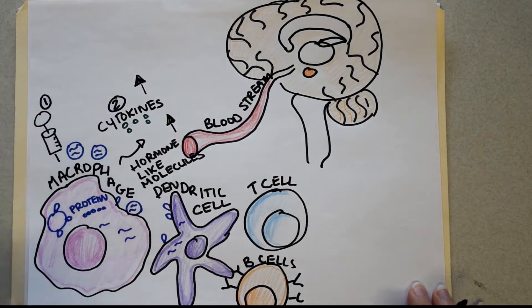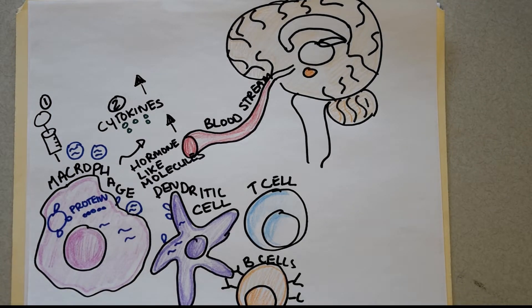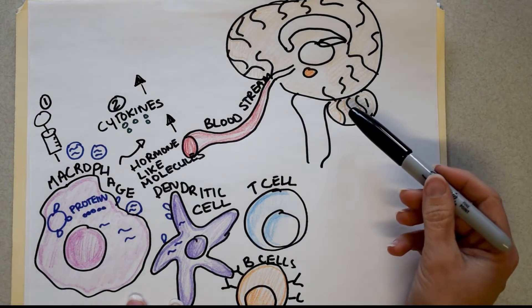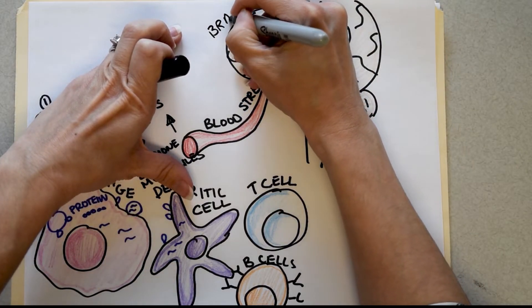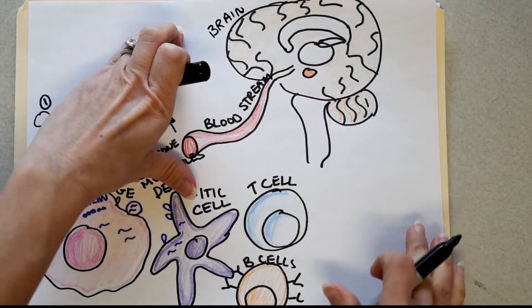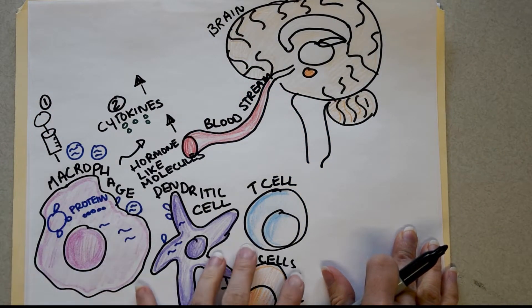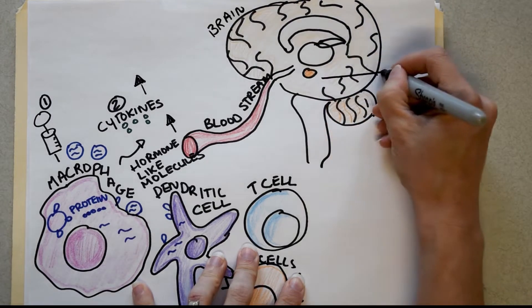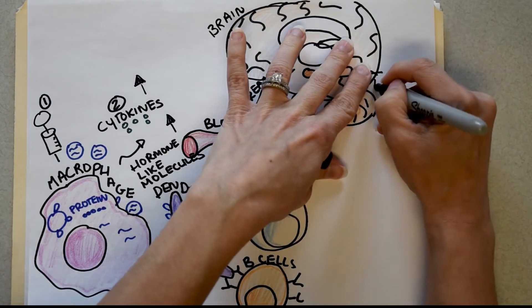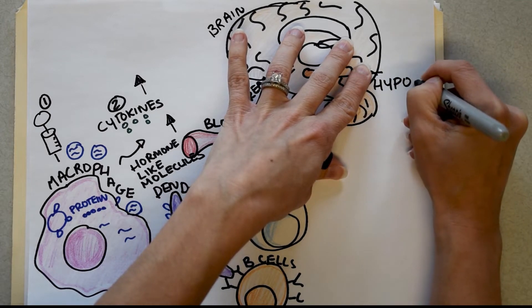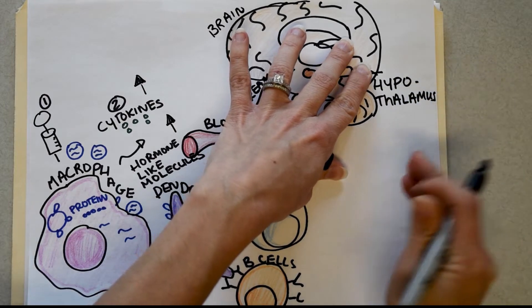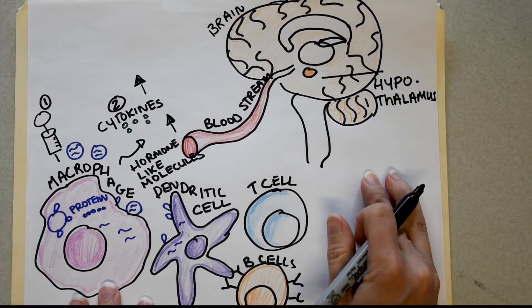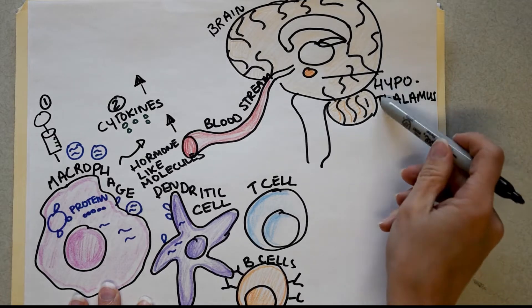So when all of these cytokines and hormone-like molecules pour into the bloodstream, they float around your entire body. And at some point, they're going to get to the brain. And if they're in a high enough level, they will cross the blood-brain barrier and can enter deeper brain structures, like this little guy right here. This is your hypothalamus, literally means below your thalamus. And why do you care? This actually regulates hunger and thirst and sleep, so you can actually blame a lot of things on your poor hypothalamus.